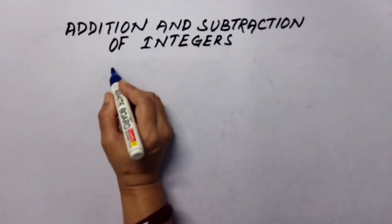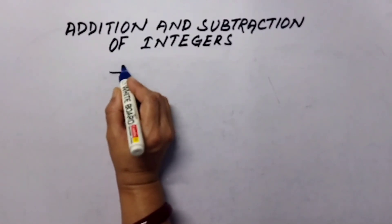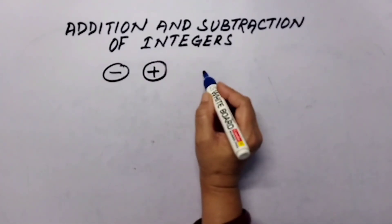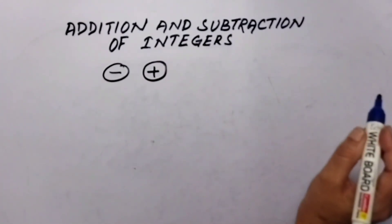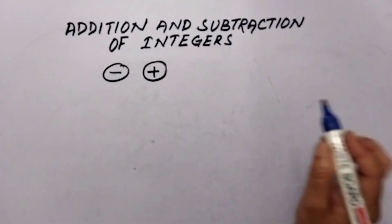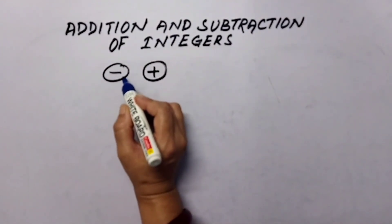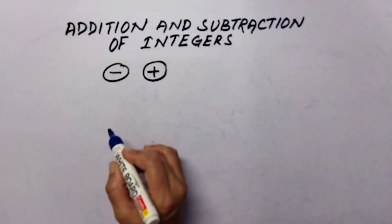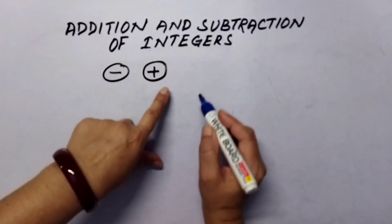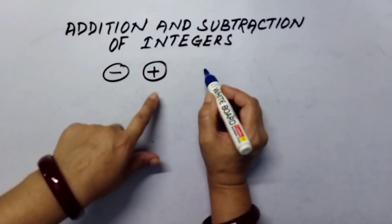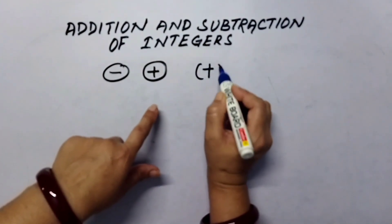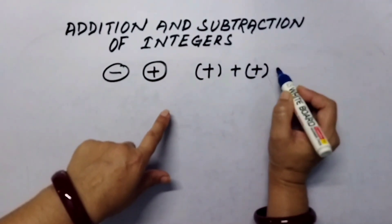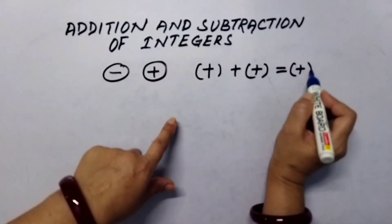We know that integers may be positive or negative — there are two types of integers — and there is also zero, which is neither negative nor positive. We are going to discuss adding negative and positive integers. When we are adding two positive integers, we get only a positive integer.